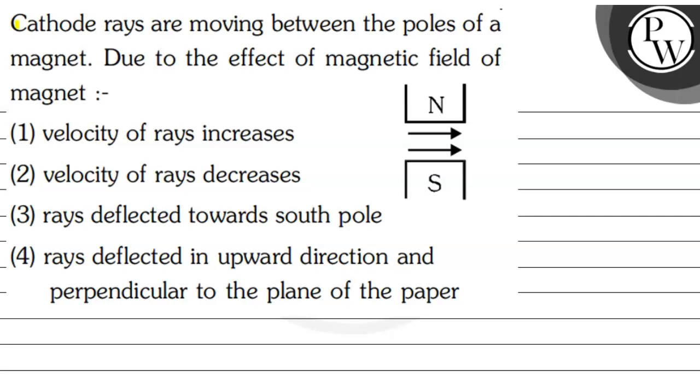Hello, let's see the question. Cathode rays are moving between the poles of a magnet due to the effect of the magnetic field of a magnet.